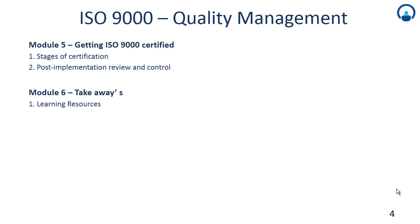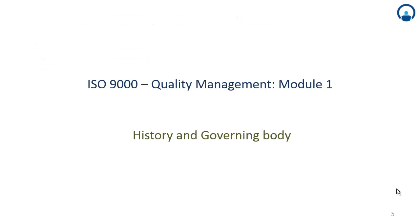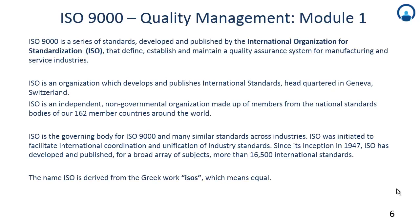Let's get started. Module 1: History and Governing Body. ISO 9000 series is basically a package of multiple standards. It is a series — that's why it is called a series of standards — developed and published by the International Organization for Standardization, that define, establish and maintain a quality assurance system for manufacturing and service industries.